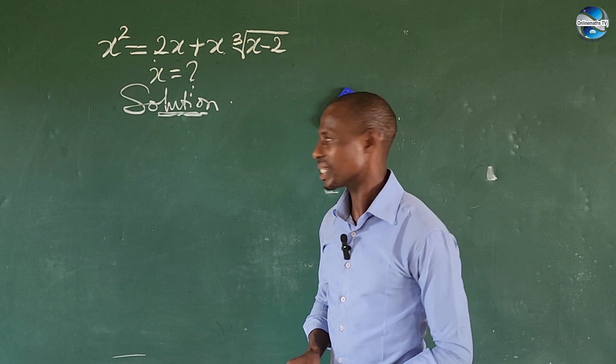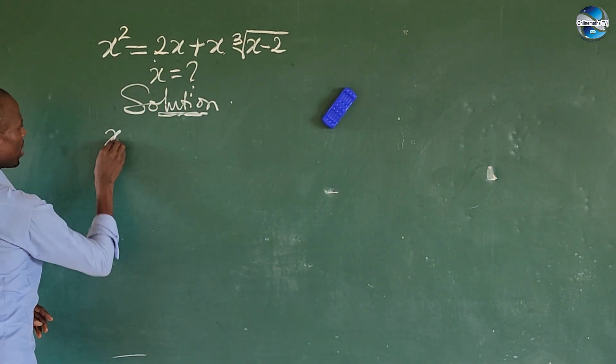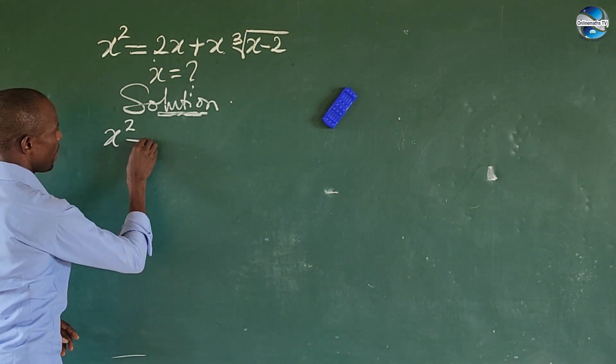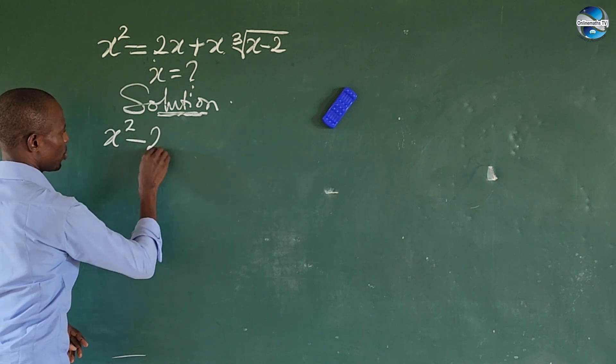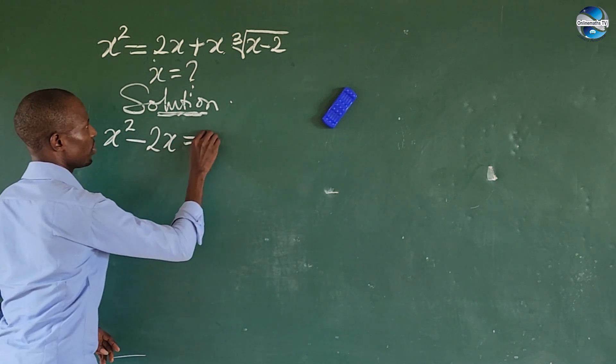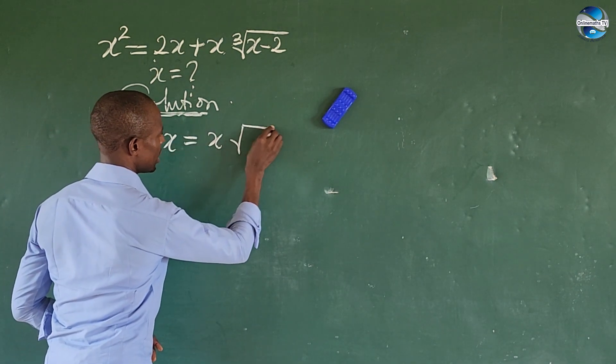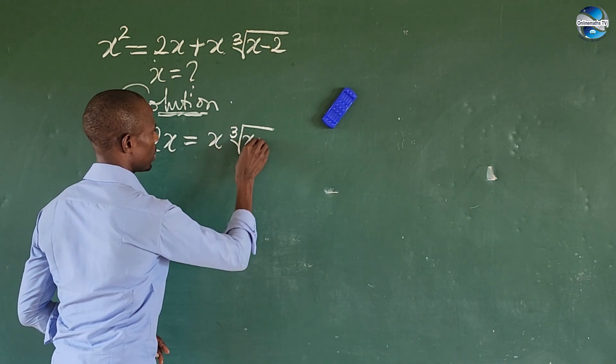Rewriting this gives us x² minus 2x equals x times the cube root of x minus 2.